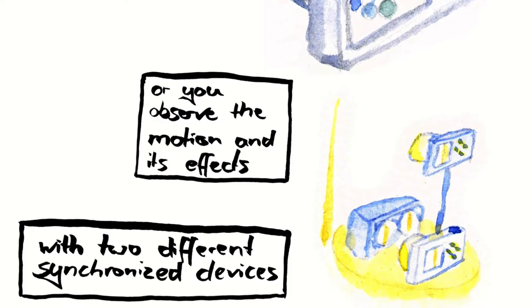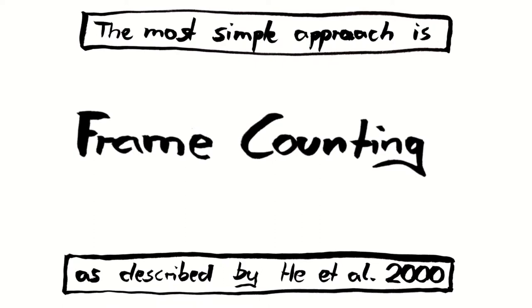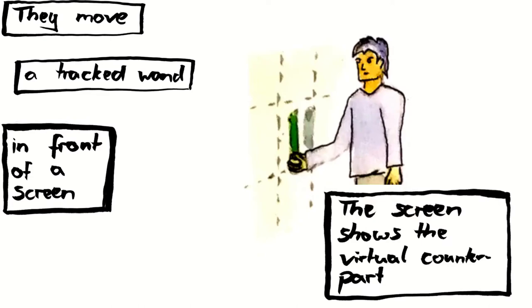The most simple approach is frame counting as described by Hay et al. They move a tracked wand in front of a screen. The screen shows the virtual counterpart. The camera records the scene.